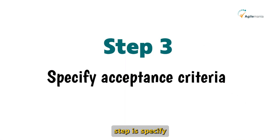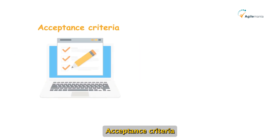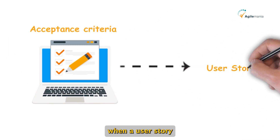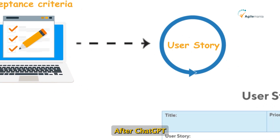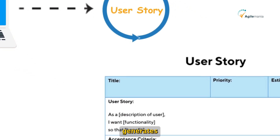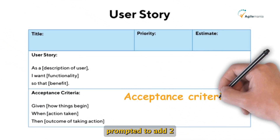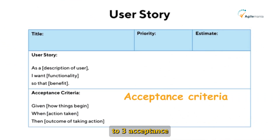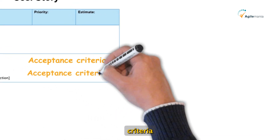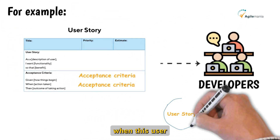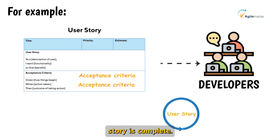The next step is to specify acceptance criteria. Acceptance criteria are essential for defining when a user story is complete. After ChatGPT generates the initial user story, prompt it to add 2-3 acceptance criteria. For example: 'Add 2-3 acceptance criteria that would help the dev team understand when this user story is complete.'